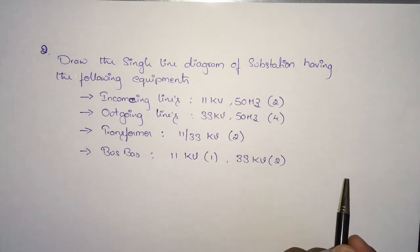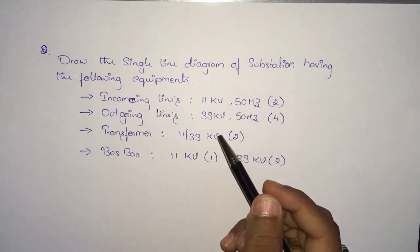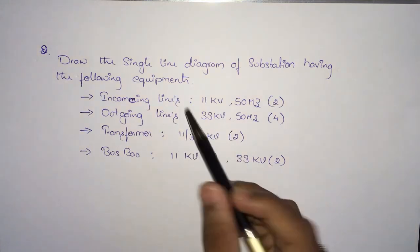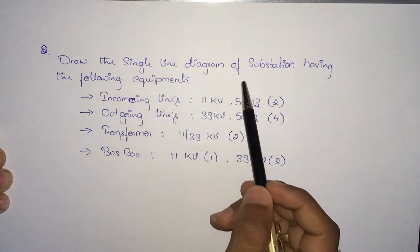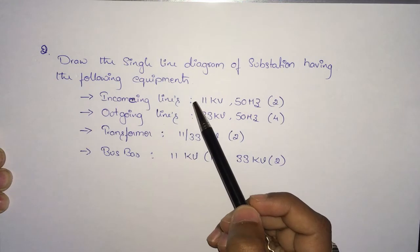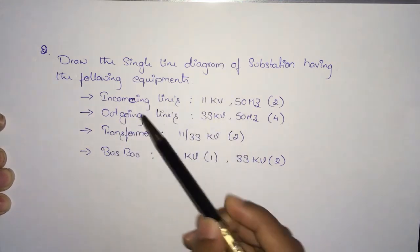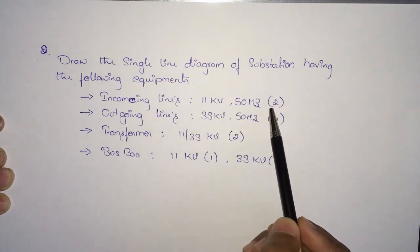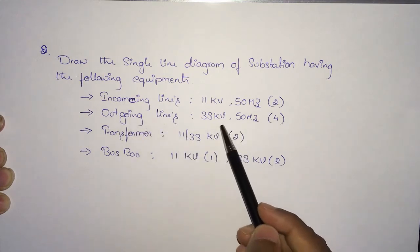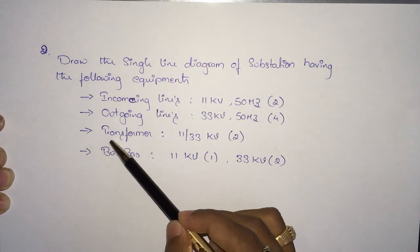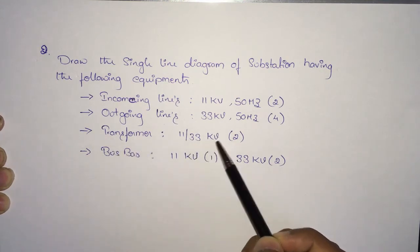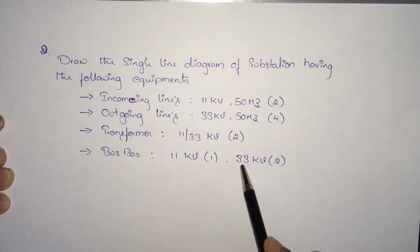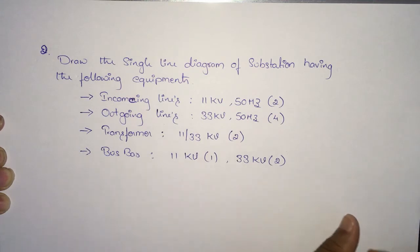Today we are going to discuss one more problem on single line diagram. Here is the question: draw the single line diagram of a substation having the following equipment — incoming line 11 kV 50 Hz of two quantity, outgoing lines 33 kV 50 Hz of four quantity, transformers 11/33 kV of two quantity, bus bar 11 kV one quantity, and 33 kV two quantity.